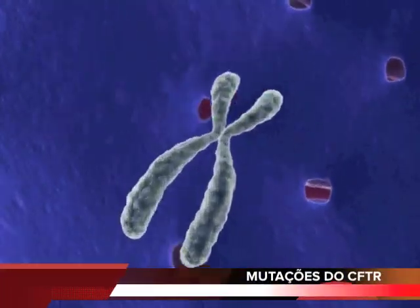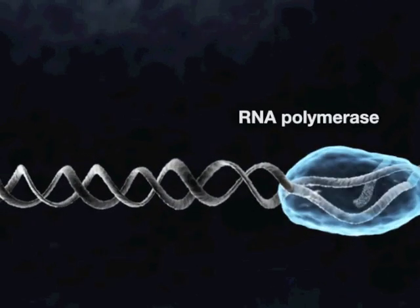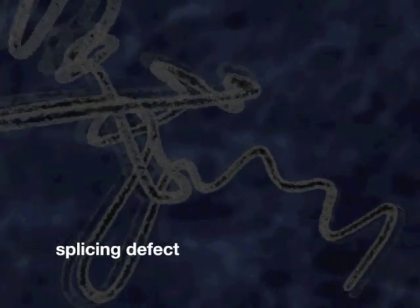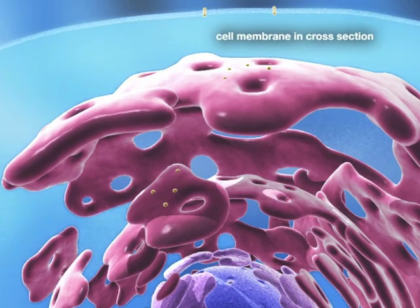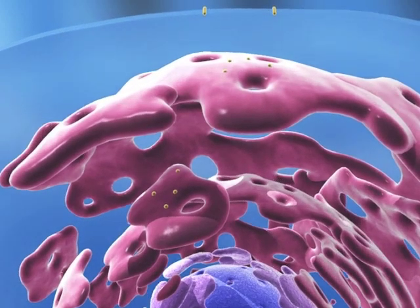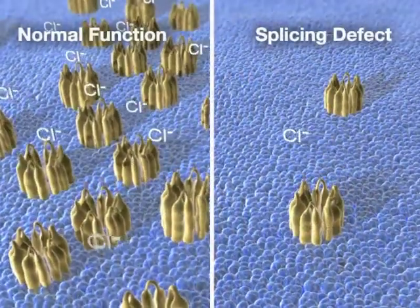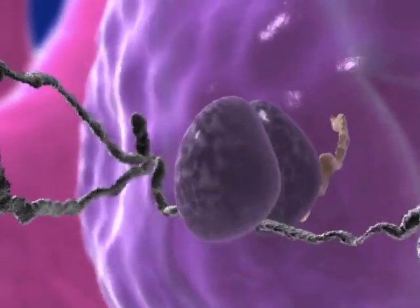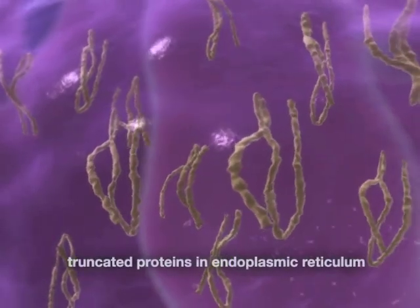Different CFTR mutations cause disruptions at various stages of CFTR protein synthesis or in several aspects of function. Mutations that cause a splicing defect result in CFTR messenger RNA that is not properly processed. Although some functional protein may be produced, the amount of CFTR at the cell surface is decreased in comparison to normal levels. Premature stop codon mutations prevent full translation of mRNA, resulting in truncated CFTR, which is not functional and never reaches the cell surface.